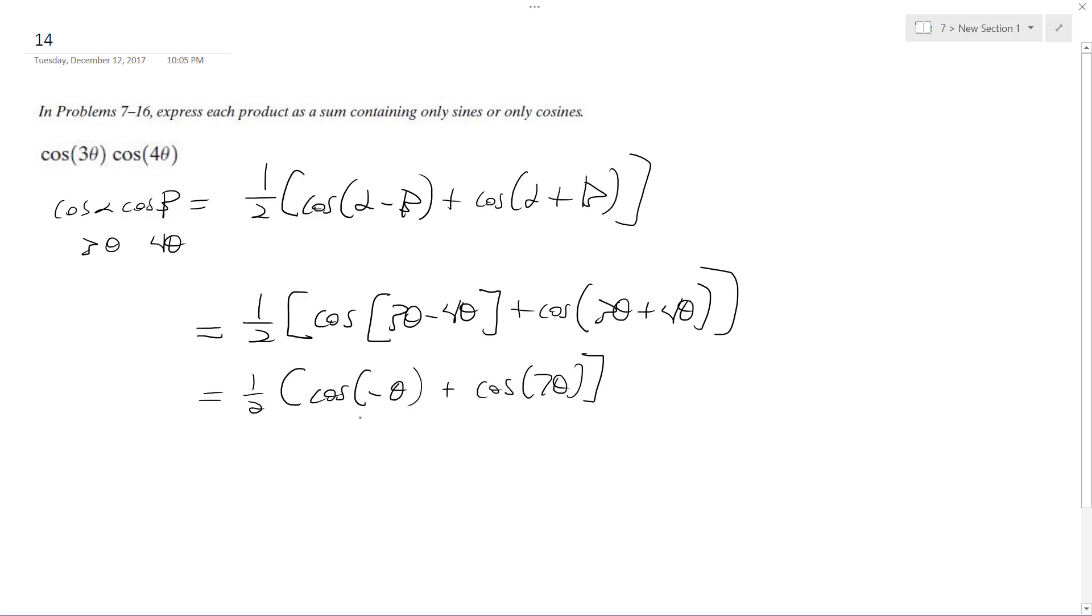So cosine is an even function, so this negative theta is the same thing, it's just theta, because it's the cosine.